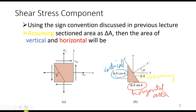The same sign convention will be used here. If you look at diagram A, figure A, this is a 2D element. This axis is the x-axis and this axis is the y-axis. The stresses acting on this element are sigma_x, sigma_y, and tau_xy, and equivalent stresses are also being acted upon here.